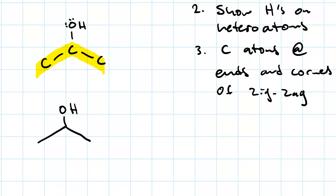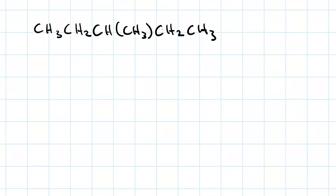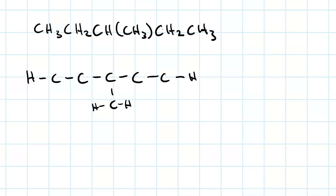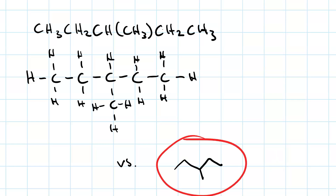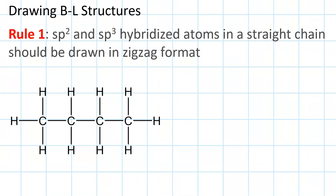And that, my friends, is a lot less work. For instance, this compound — 3-methylpentane. Imagine if you had to draw the entire Lewis structure. I quickly get tired of drawing in all these hydrogens, and I imagine you will too. Wouldn't it be easier to just use the bond line structure? It's much easier. When you're drawing bond line structures, draw all sp2 and sp3 hybridized atoms in a zigzag format.